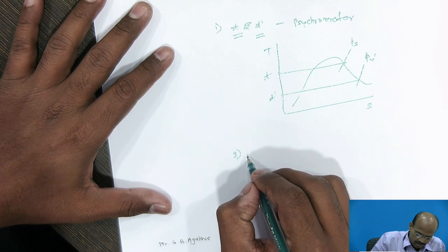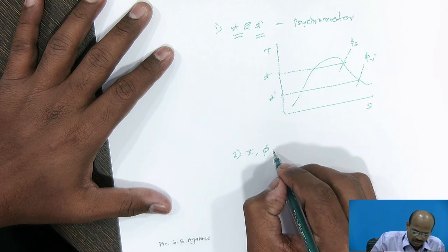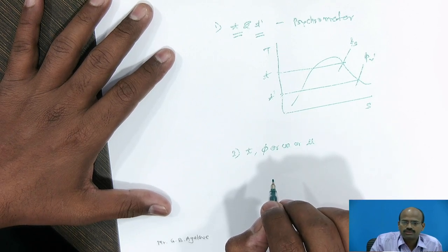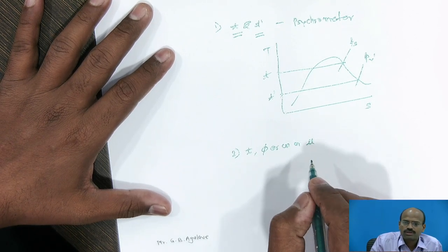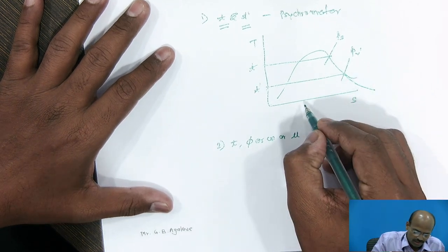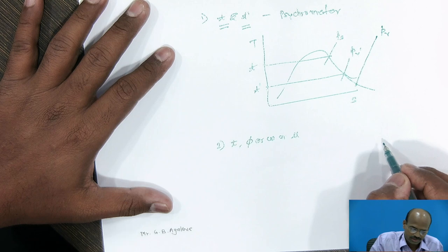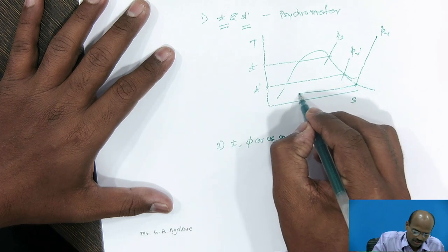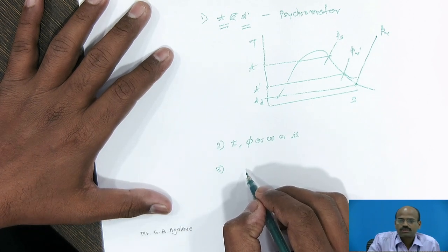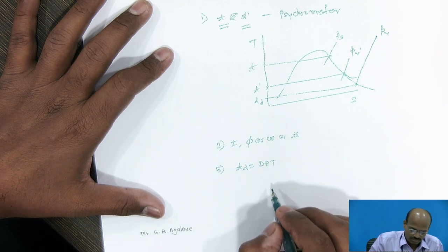In second type, we will be knowing along with the dry bulb temperature, either relative humidity or specific humidity or degree of saturation. So, by equations, we can find out the other psychrometric properties. Now, if I cool the air at Pv pressure, then from steam table, I may get the dew point temperature. So, this is the third method from which I can obtain the dew point temperature of that moist air.